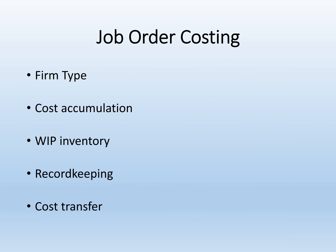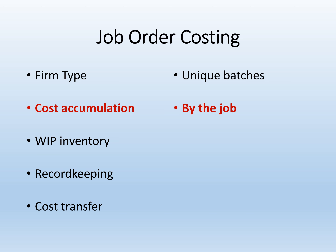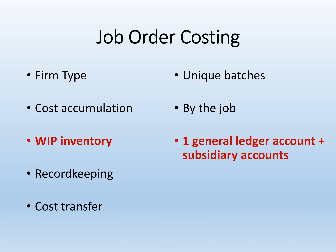Firms that choose job order costing think of their production process as unique batches, so it makes sense for them to accumulate the cost of each batch by the job. As we saw in chapter 17, a firm that uses job order costing has one work in process account in the general ledger, and that account is tied to subsidiary accounts for each job, so the firm can track how much cost went into each of those jobs.